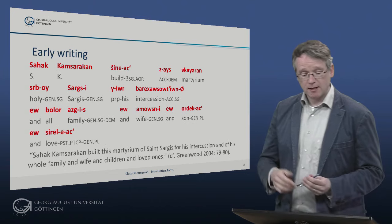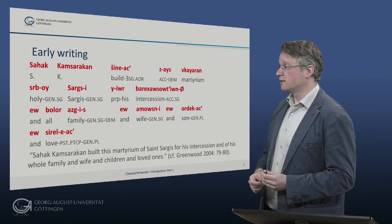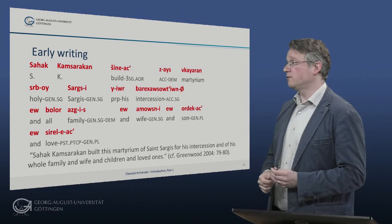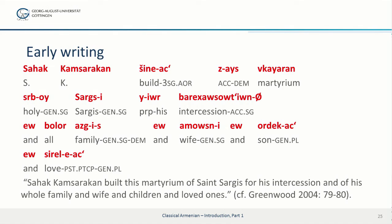Here we can see another nice example of early writing. The inscription reads: Sahak Kamsarakan shinyat zais vkajaran sirbo Sargis i jur bari hosutiun yev bolor asgiz yev amusni yev vordekats yev sirelyats.